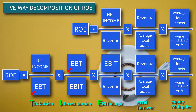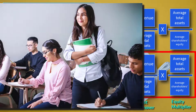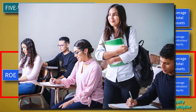After eliminating EBIT, EBT, revenue, and Average Total Assets, the result is the original ROE formula of Net Income over Average Shareholders' Equity. So this is our formula for five-way decomposition of ROE. I hope these techniques are great helps in acing your exams.